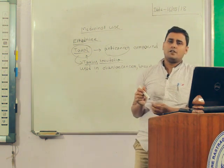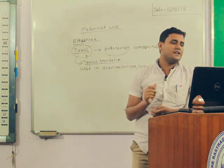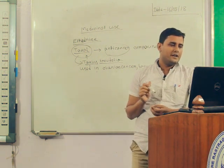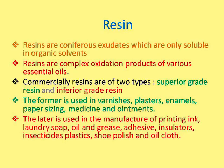Another important product is resin. Resins are coniferous exudates which are soluble only in organic solvents such as ether and ethanol. There are mainly two types of resins.